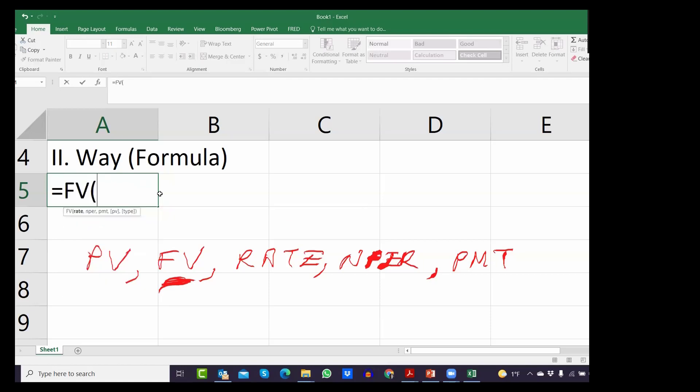FV calculates the future value of any money once you enter all of those inputs. So when you write equal FV and open the parentheses, Excel is asking you all those inputs. So what is the rate? The rate was 4%. I'm going to enter 4% here. Now NPER is number of periods. In this question, I have three years. So I'm going to write three here.